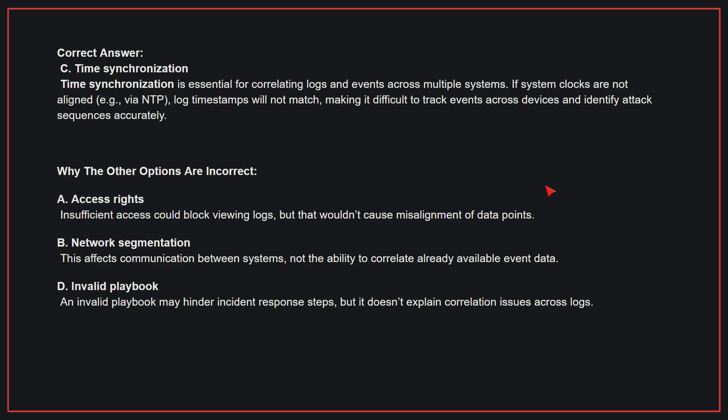Why the other options are incorrect: A. Access rights — insufficient access could block viewing logs, but that wouldn't cause misalignment of data points. B. Network segmentation — this affects communication between systems, not the ability to correlate already available event data. D. Invalid playbook — an invalid playbook may hinder incident response steps, but it doesn't explain correlation issues across logs. Therefore, the correct answer is C.